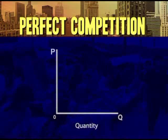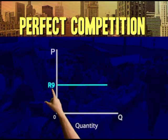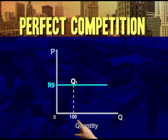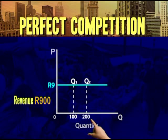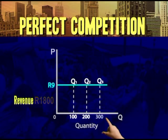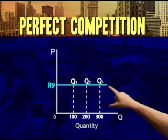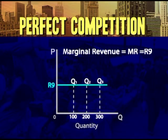To illustrate this situation: according to this demand curve, the selling price of the product is nine rand. If the producer sells one unit, his revenue will be nine rand. If he sells 100 units, his revenue will be 900 rand; 200 units, or 1,800 rand, and so on. So given this horizontal demand curve, each extra unit that the producer sells will add nine more rand to the firm's total revenue.